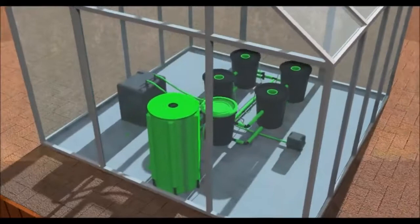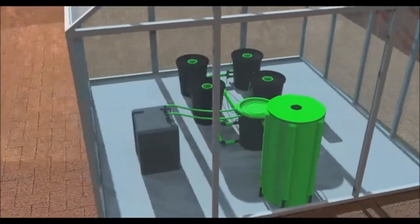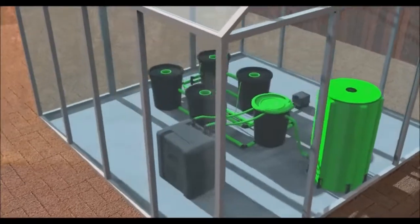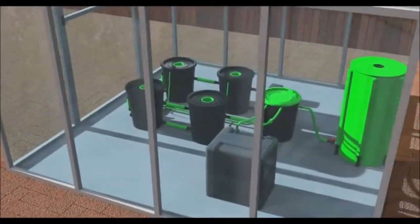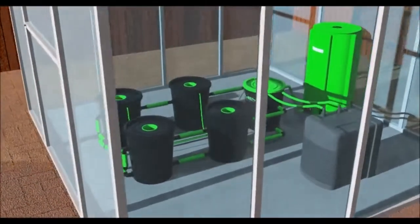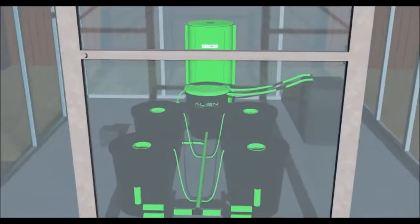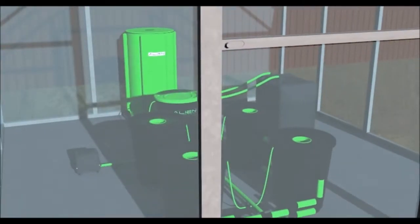The ideal nutrient solution temperature is between 18 and 20 degrees. At this temperature, it is far less likely your plants will contract a root disease. If your solution temperature rises above 24 degrees, then you should consider installing a water chiller. This will give you complete control over the temperature of your plant's roots.